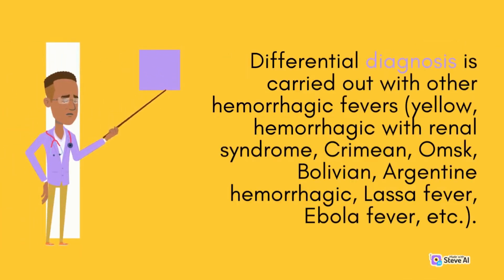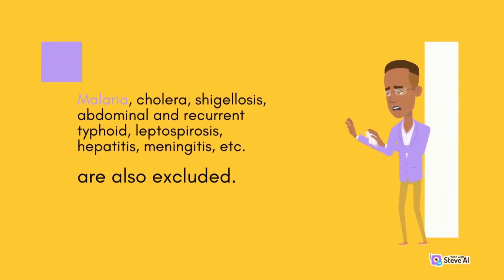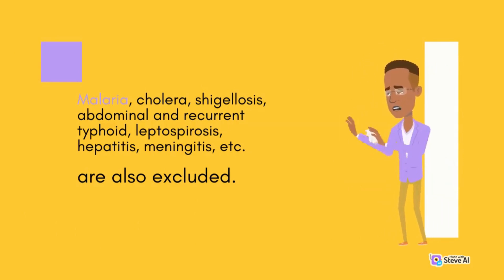Differential diagnosis is carried out with other hemorrhagic fevers including yellow fever, hemorrhagic fever with renal syndrome, Crimean, Omsk, Bolivian, Argentine hemorrhagic fever, Lassa fever, Ebola fever, and others. Malaria, cholera, shigellosis, abdominal and recurrent typhoid, leptospirosis, hepatitis, and meningitis are also excluded.